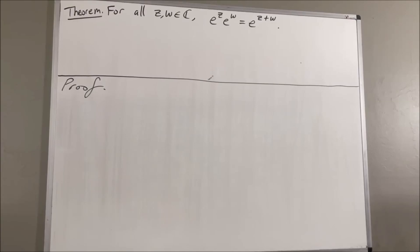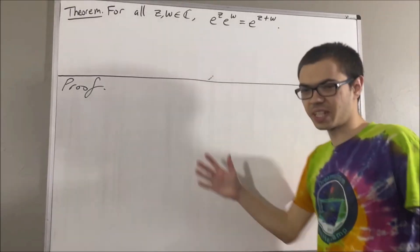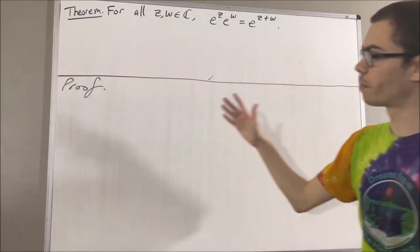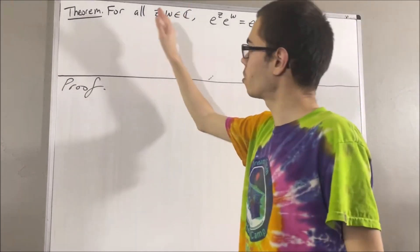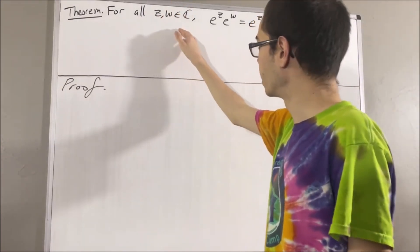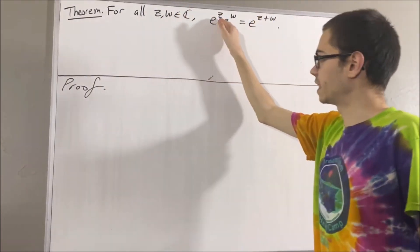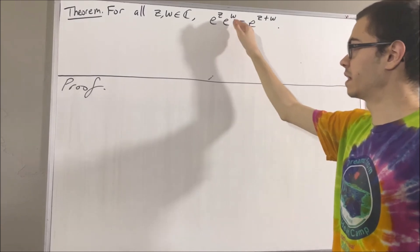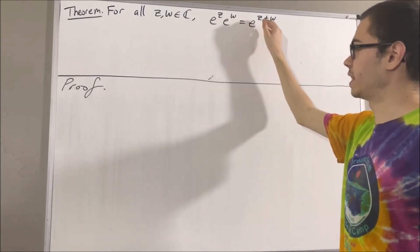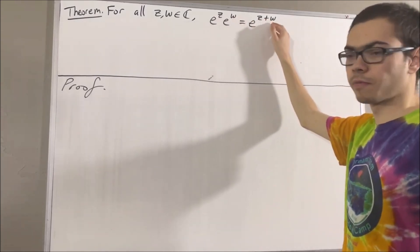Hello! In this video, we are going to prove the following theorem. For all complex numbers z and w, e to the z times e to the w is equal to e to the z plus w.